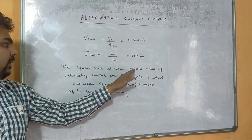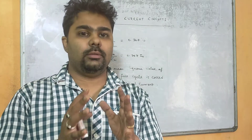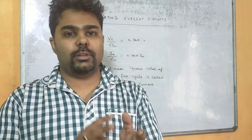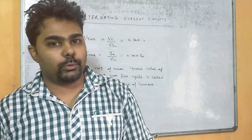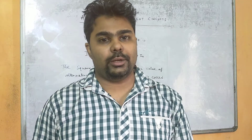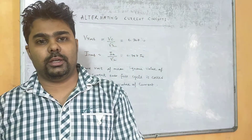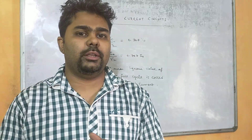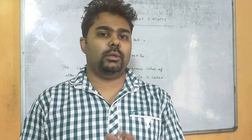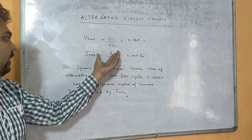IRMS is the square root of the mean square value of alternating current. The average value of AC current is 0.637I₀ for the positive half and minus 0.637I₀ for the negative half. For the complete cycle the mean value of alternating current is zero. When we find the square root of the average value over a complete cycle we get I₀ divided by root 2.